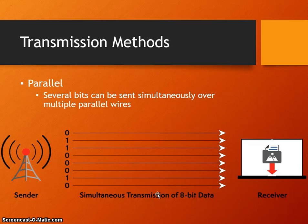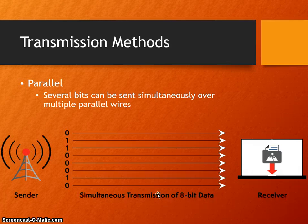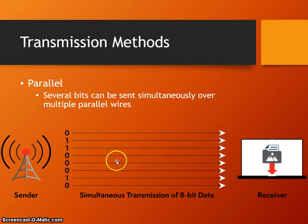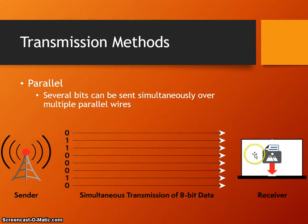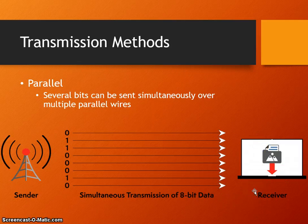Parallel works very well over short distances. Over short distances it can be faster, but the problem is when we get to long distances, we have the issue that the bits become what's known as skewed. Because of the different resistance in the material — each copper wire may have a slightly different resistance — if we send a lot of data, gradually those bits become slightly skewed and arrive out of sequence. Therefore the receiver is not receiving all the bits at the same time, the data becomes out of sync, and this corrupts the data so it has to be re-sent.